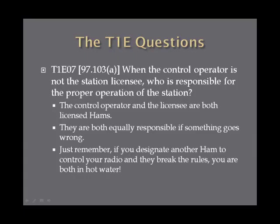When the control operator is not the station licensee, who is responsible for the proper operation of the station? Remember that if the control operator and the station licensee are two separate hams, they are both licensed hams, which means they are both equally responsible if something goes wrong. So if you designate another ham to be the control operator for your station and they break the rules, you are both in violation.